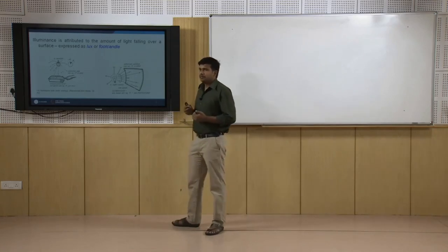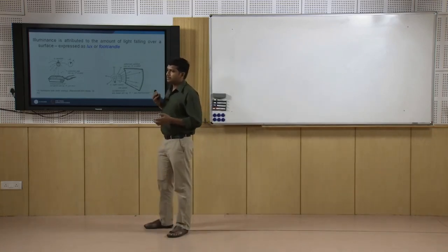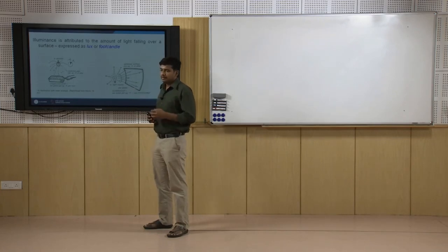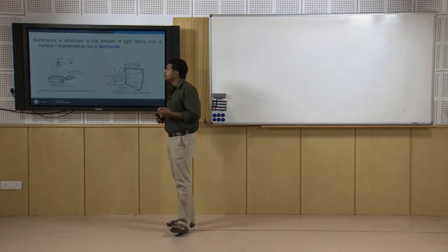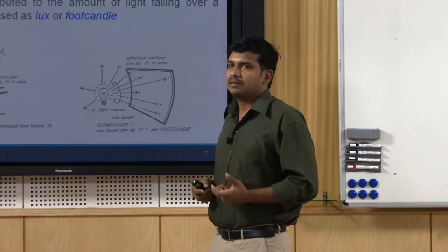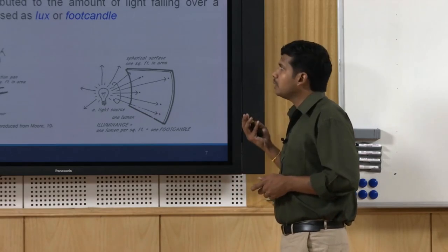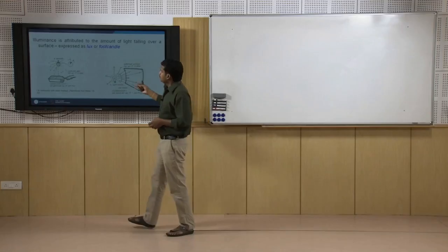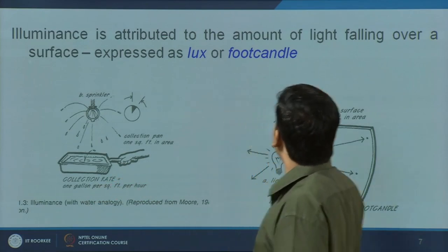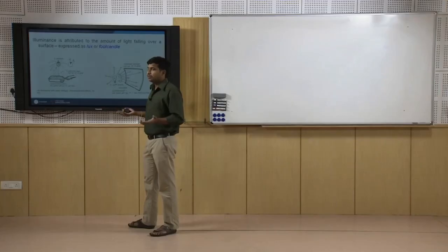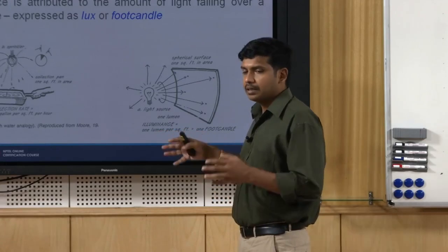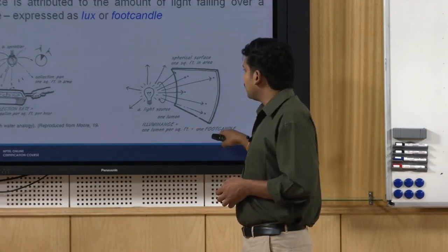Now let us look at two indices which are more commonly used and which standards refer to when specifying the amount or kind of lighting required. The first is illuminance level — you will know this as lux levels. Lux is a unit; in the older system it was called foot candle. It is the amount of light falling over a surface — lumens per square meter or lumens per square feet. One foot candle converts to around 10.8 lux.